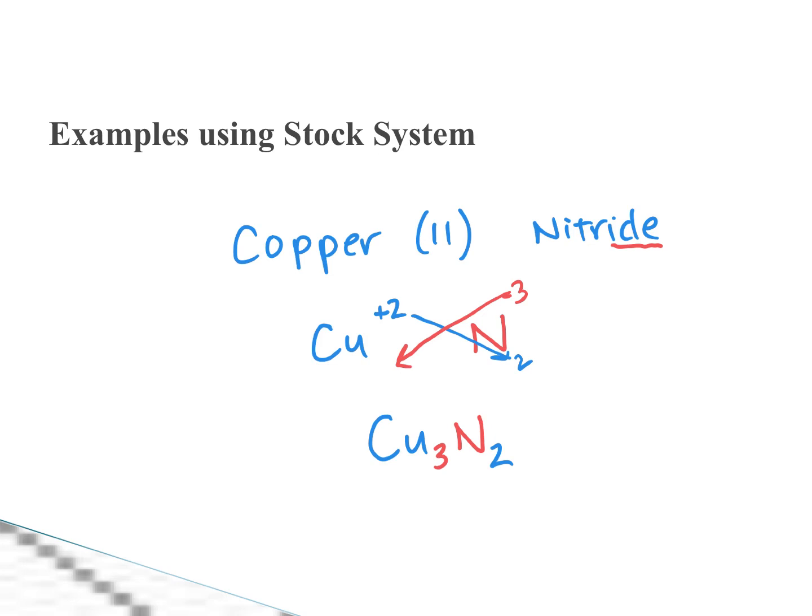Okay, well if it was copper 1, so say we switch it up and we write down a copper 1 nitride. But then I would have Cu with a positive 1, nitrogen with a negative 3. The 1 goes right there, 3 goes right there, and I would have Cu3N1, but we don't write the 1. So note, the formula changes depending on which copper we're talking about, and that's why we have to keep track of the stock system. Which one are we talking about?